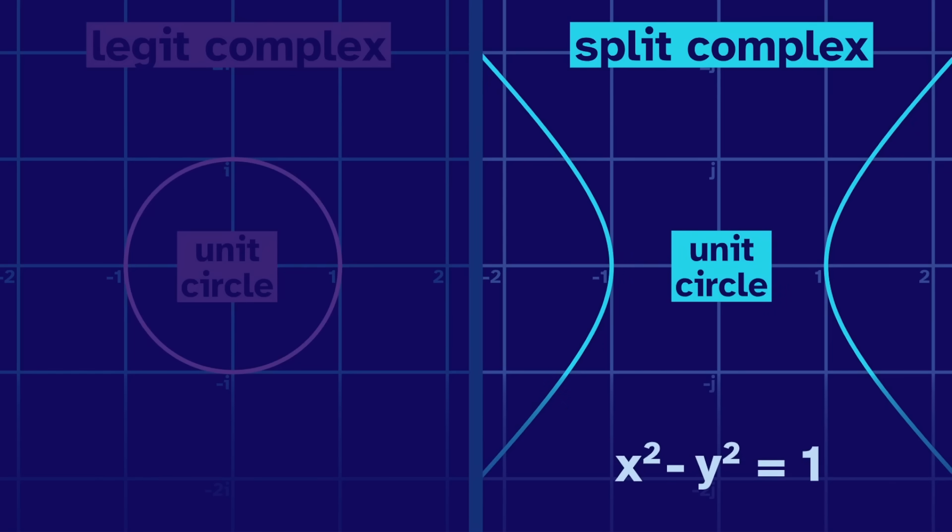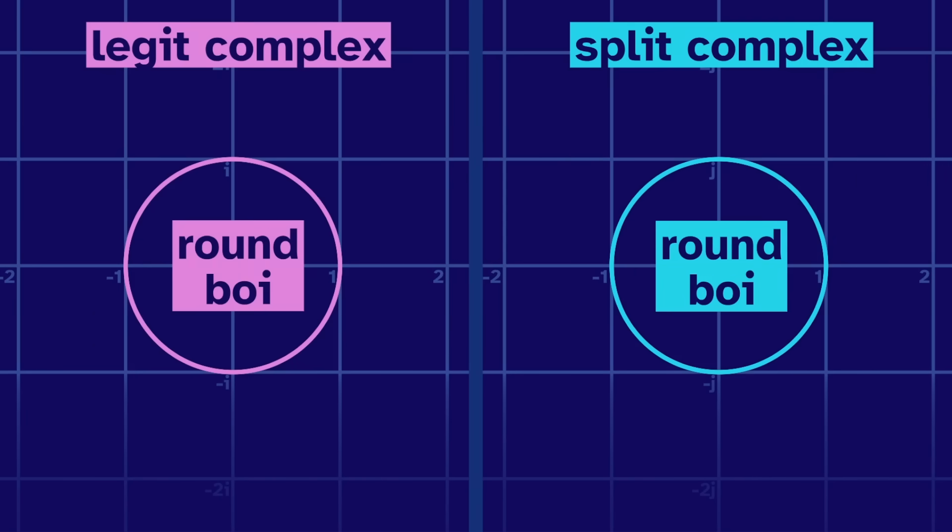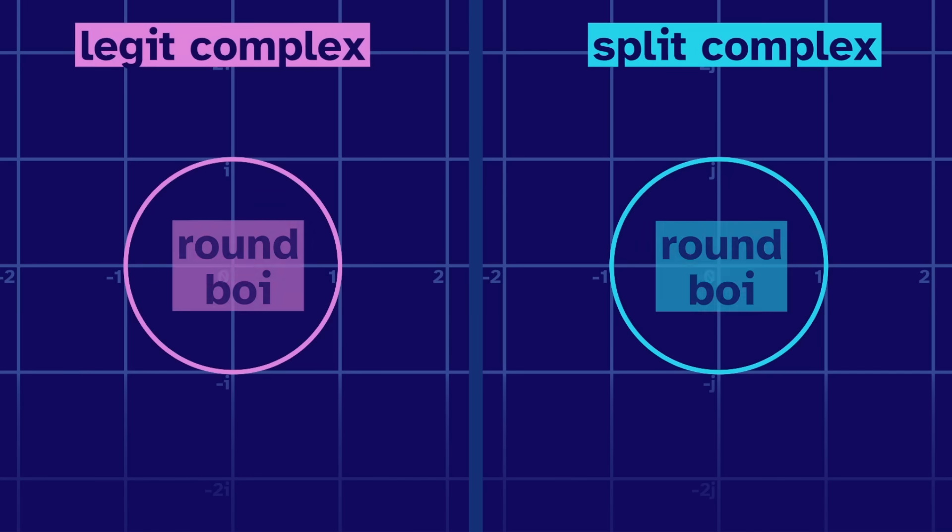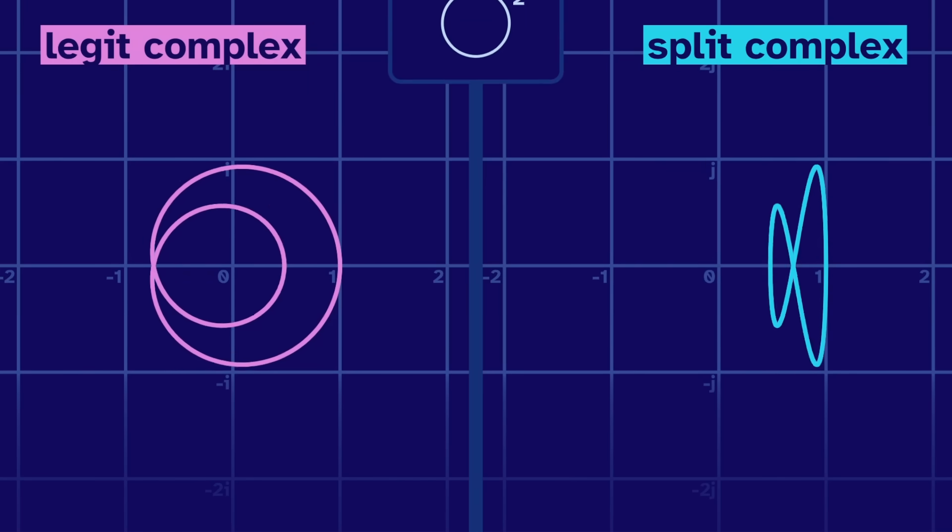But it feels weird to call this a circle. Instead of using size, we could define a circle to be round boy. The same shape in both systems. Now, watch what happens when all these points are squared.